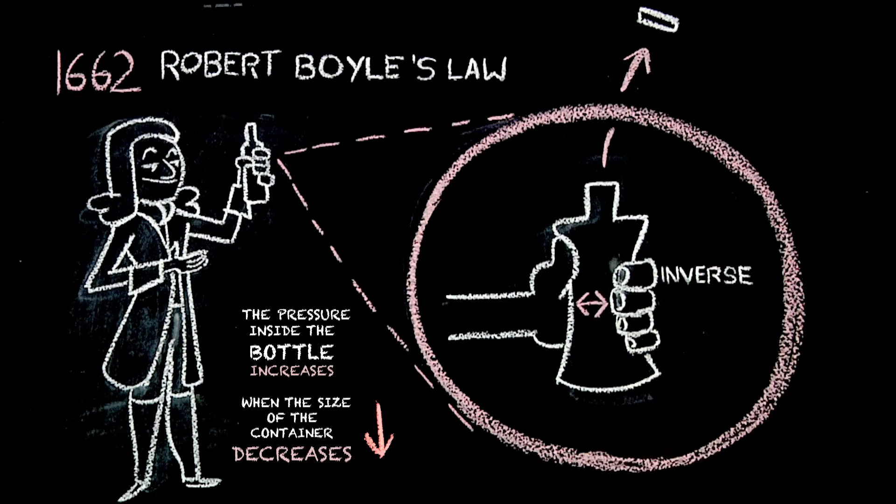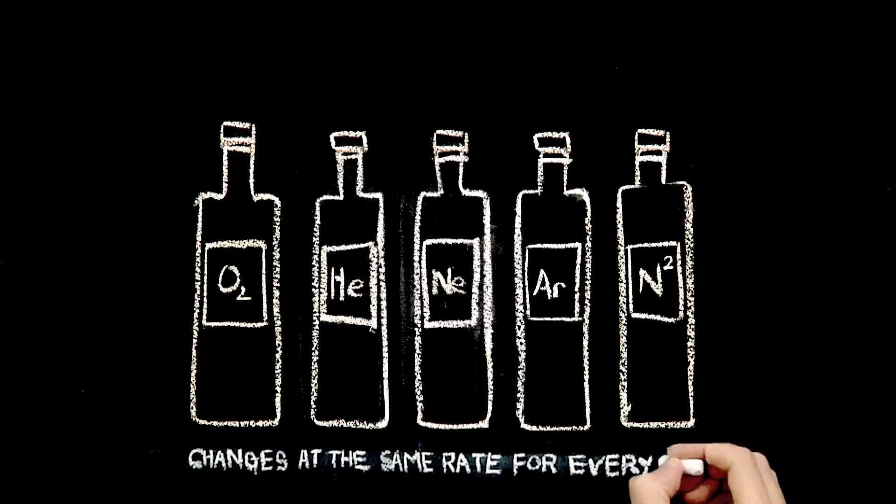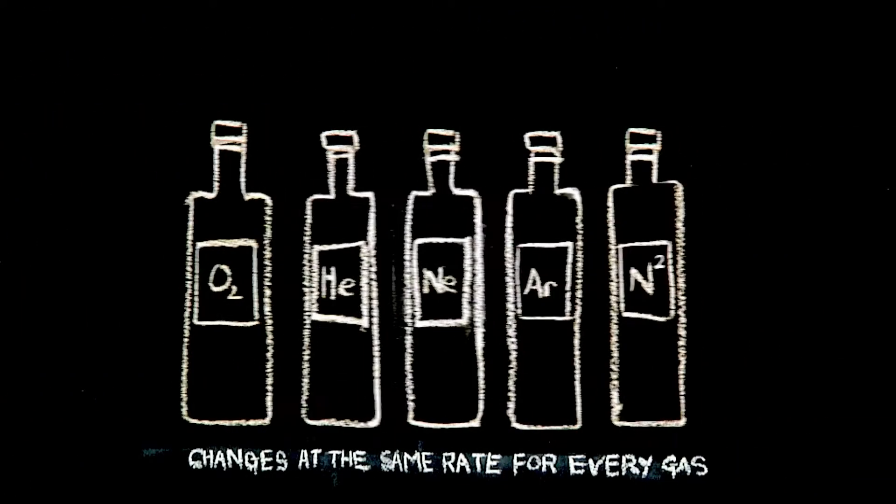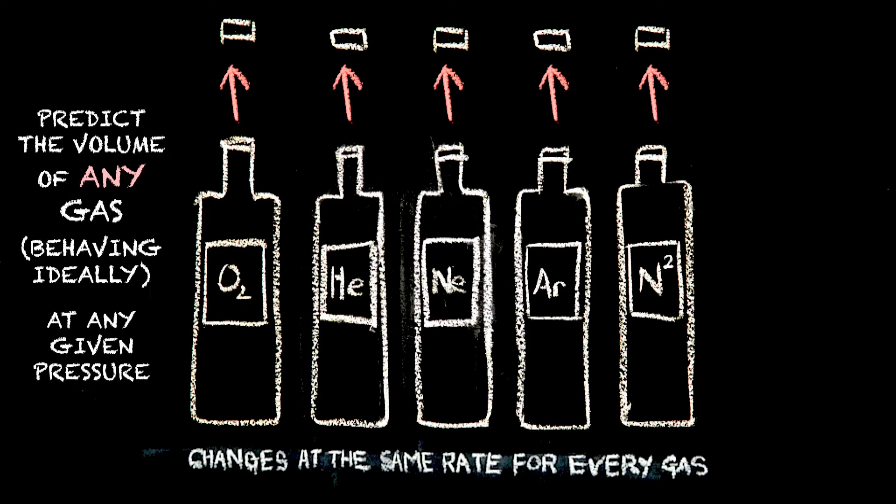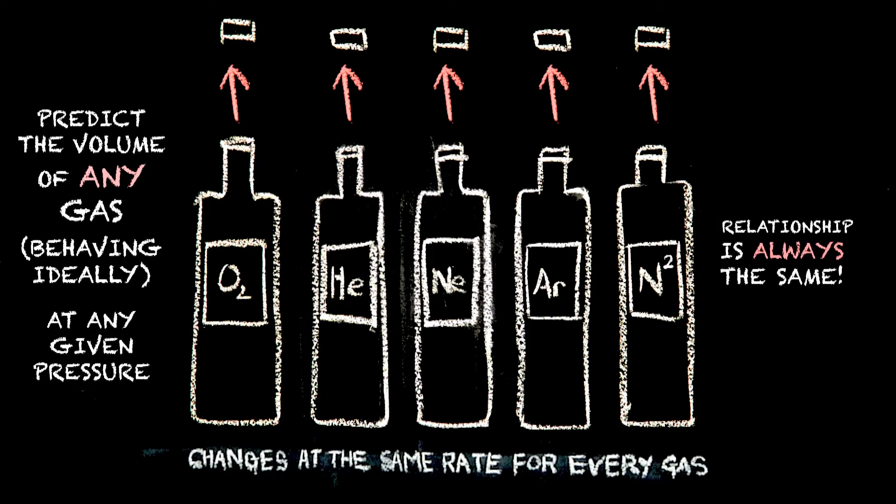This is called an inverse proportion, and it changes at the same rate for every gas. Boyle's law allows chemists to predict the volume of any gas at any given pressure because the relationship is always the same.